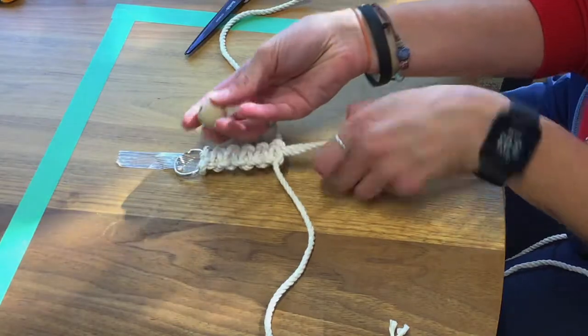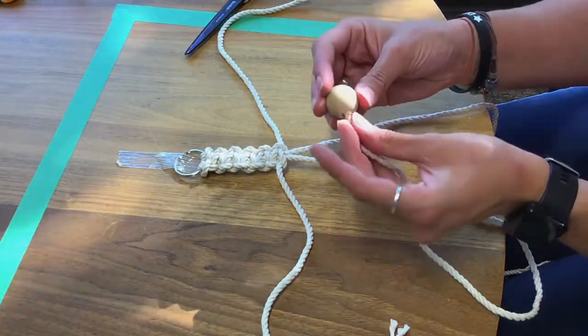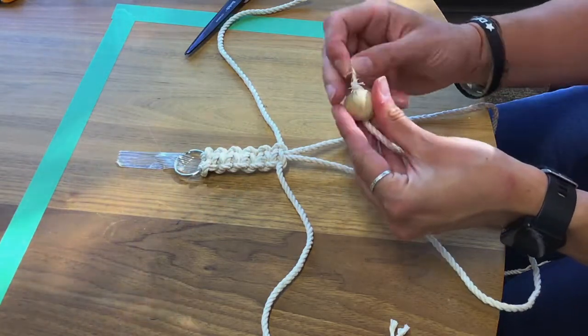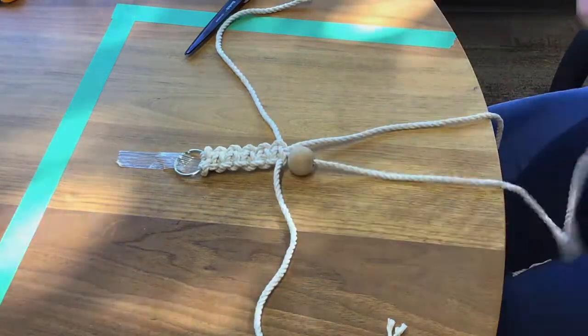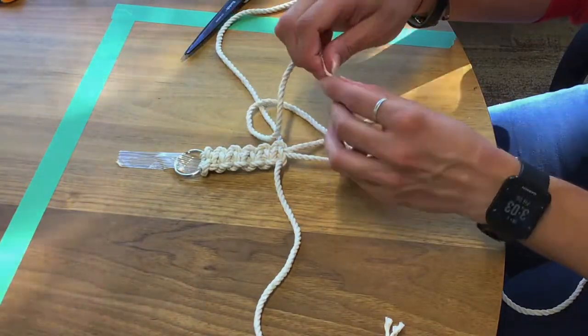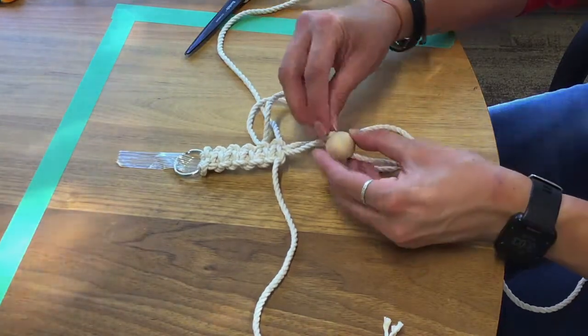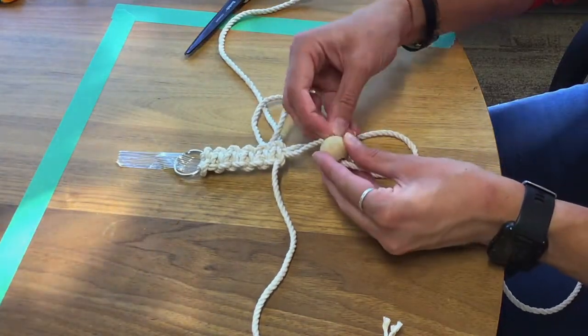The next part is to put on a wooden bead. You are going to thread it through the two middle pieces of rope. Your ends of the rope might be frayed a little bit. So I do grab a pen here to help me push it through the hole.